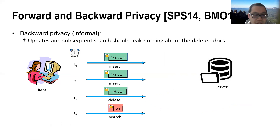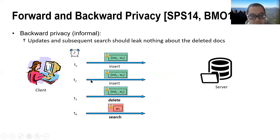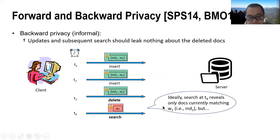For backward privacy, it is expected that updates and subsequent searches should not leak anything about the deleted documents. To make this clearer, let's take an example. Suppose the client inserts document-keyword pairs (IND1, W1) and (IND2, W2) at times T1 and T2. At time T3, she decides to delete the document-keyword pair (IND1, W1). At time T4, she performs a search query over keyword W1. Ideally, the search at time T4 reveals only the documents currently matching keyword W1.